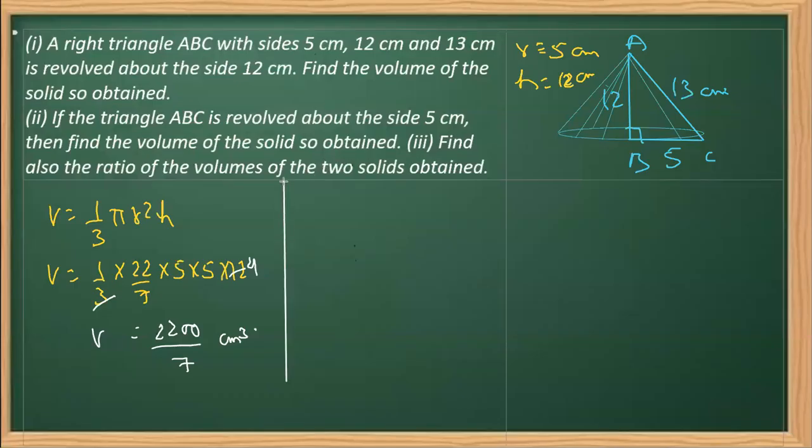Once we have calculated the volume of case one, we have to calculate the volume in the second case. When we read the second part, it says the same triangle is rotated about the side 5. This time the axis of symmetry is going to be 5, so the height will become 5 and the radius will be 12.